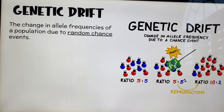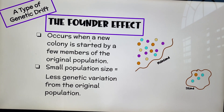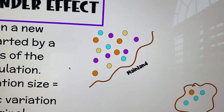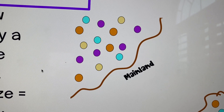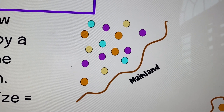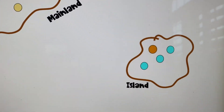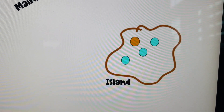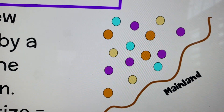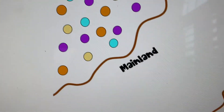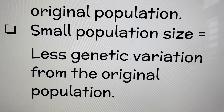There are two different types of genetic drift. The founder effect is a type of genetic drift where you have a mainland — imagine all of these circles as one species — and a subset of that population moves to an island. This island population is a small subset of the mainland population, and as a result of being smaller, it also shows less genetic variation.